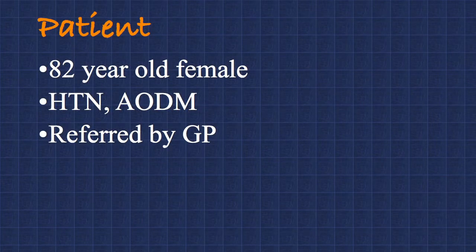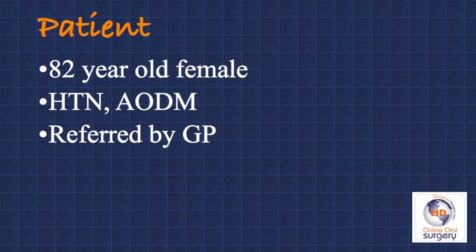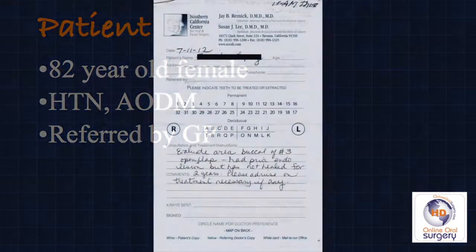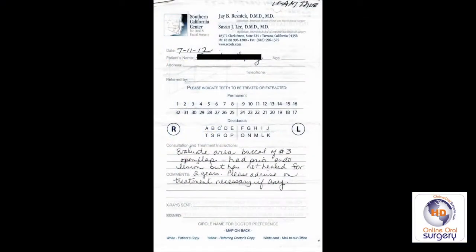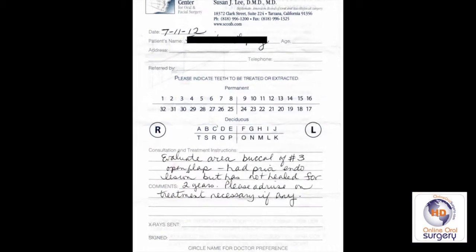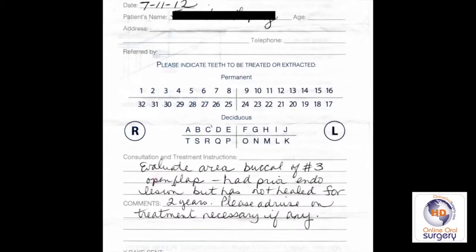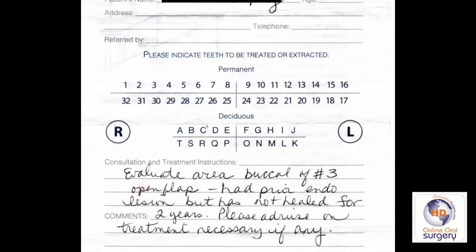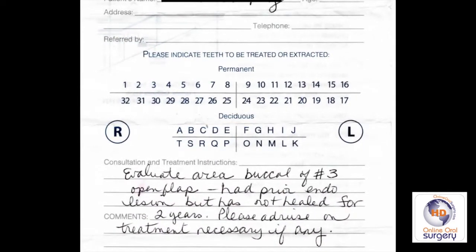This case involves an 82-year-old female that was referred to me by her general dentist. She has a history of hypertension and also of non-insulin-dependent adult-onset diabetes. The referral slip asks me to evaluate an area of an open flap that's buccal to tooth number three. The patient had prior root canal therapy because of an endodontic lesion two years ago, but the lesion has failed to heal and this apparent open flap has developed.